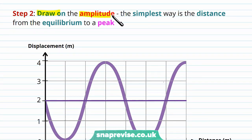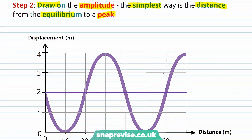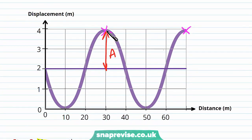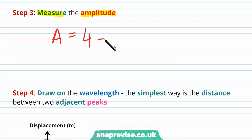The simplest way to draw the amplitude is the distance from the equilibrium to a peak. We draw a line from the peak to the equilibrium, and this distance gives us amplitude A. To measure it: our peak is at a displacement of 4 metres and our equilibrium position is at a displacement of 2 metres, so the amplitude A equals 4 minus 2, which gives us 2 metres.